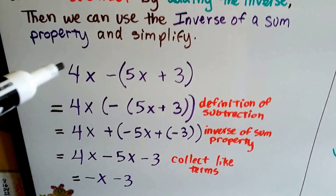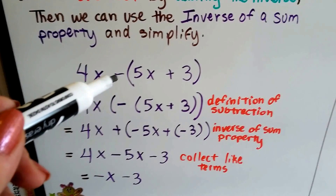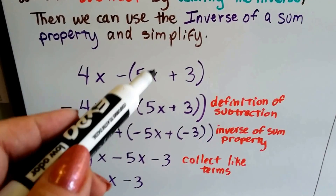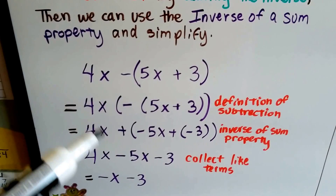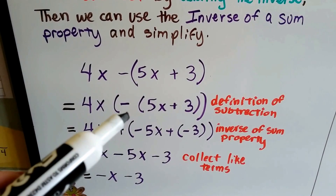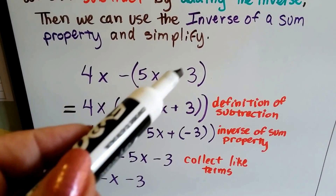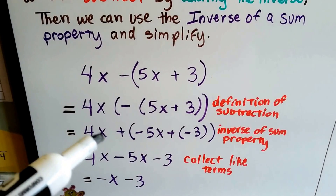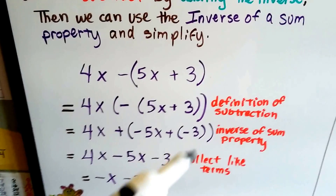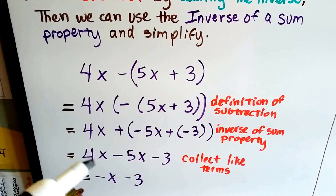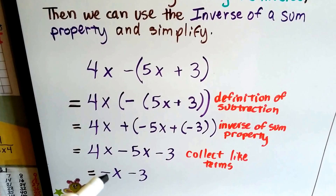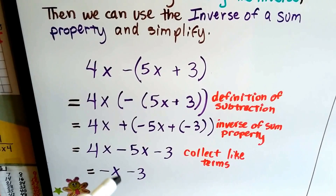Take a look at this. We've got 4x, and then we've got a negative sign, and then 5x plus 3 in parentheses. We can do 4x minus the 5x plus 3, which becomes 4x plus a negative 5x plus a negative 3 — that's the inverse of a sum property. Then we do 4x minus 5x minus 3, collect the like terms: 4x minus 5x is negative x, and we end up with negative x minus 3.